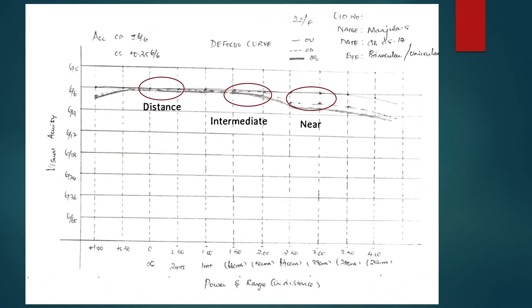When reading a defocus curve plot, pay attention to the height of the curve at three zones: the distance zone corresponding to the 0 add, the intermediate zone between 50 to 60 centimeters or between minus 1.5 and minus 2.0 add, and the near zone between 30 to 40 centimeters or between the minus 3 to minus 2.5 add. The higher the curve, the better the visual acuity and vice versa.